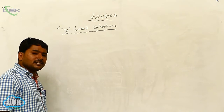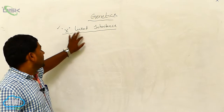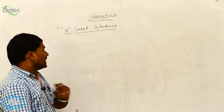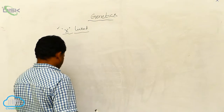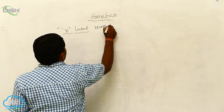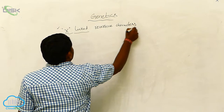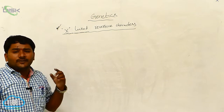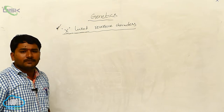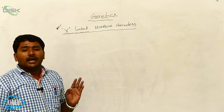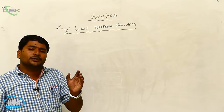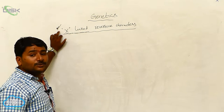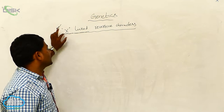If disorders are caused by mutations in genes present on the X-chromosome, they are called X-linked disorders. A genetic disorder caused due to mutations in a gene present on the X-chromosome, specifically due to a recessive allele, is called an X-linked recessive character.